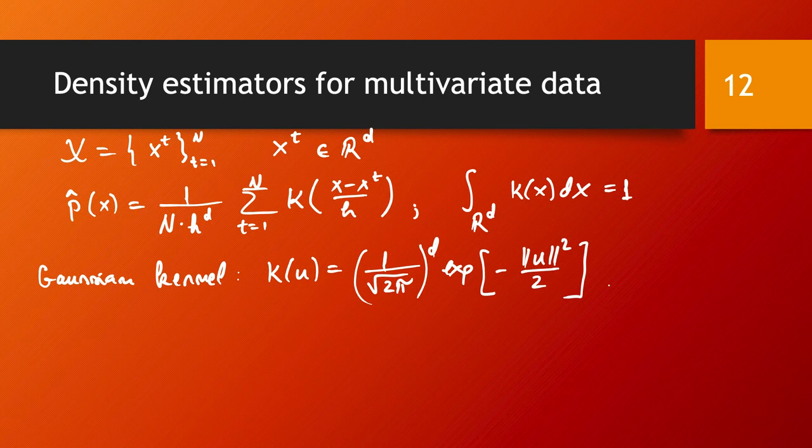One other comment I want to make is that the use of the Euclidean norm in this multivariate Gaussian kernel implies that the kernel is scaled equally on all d dimensions.